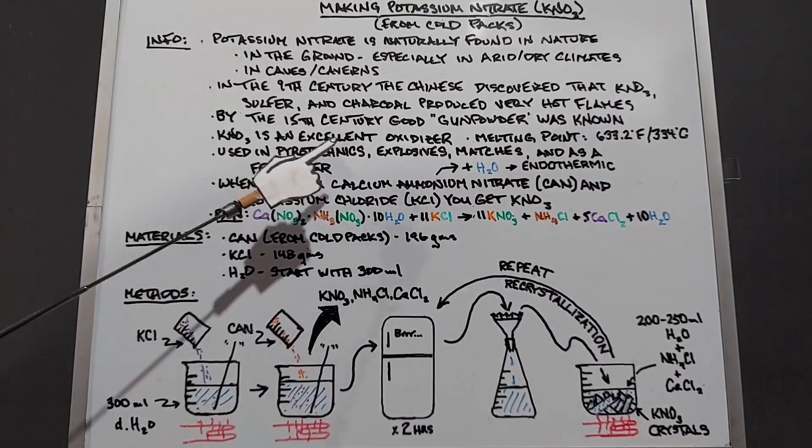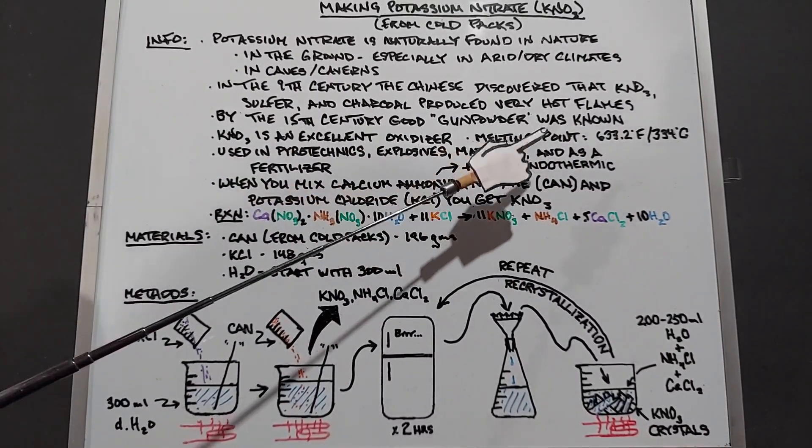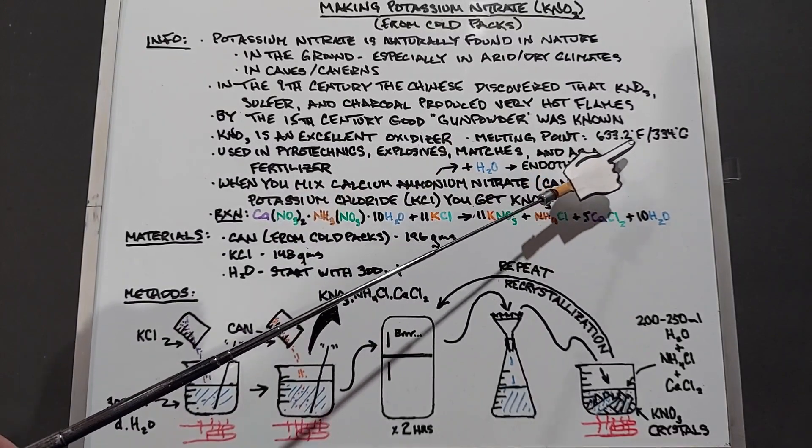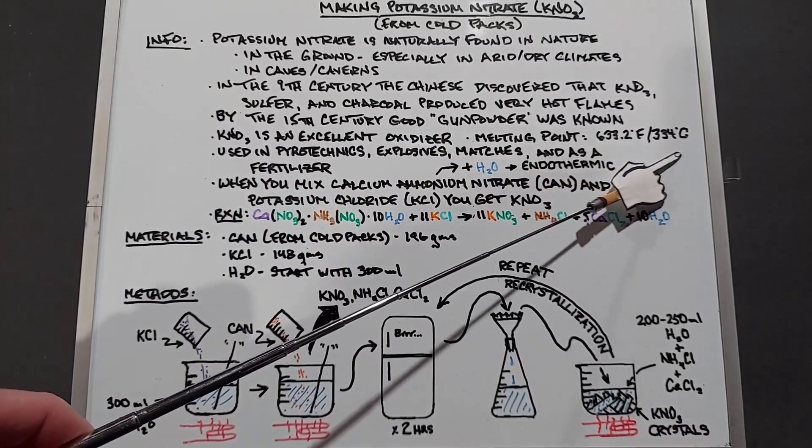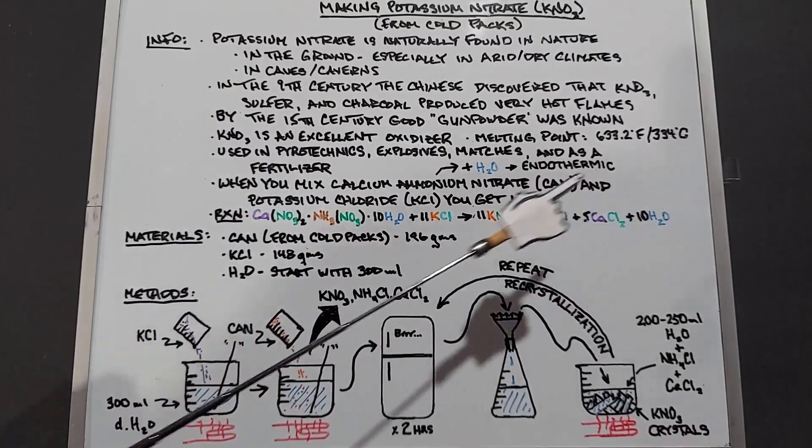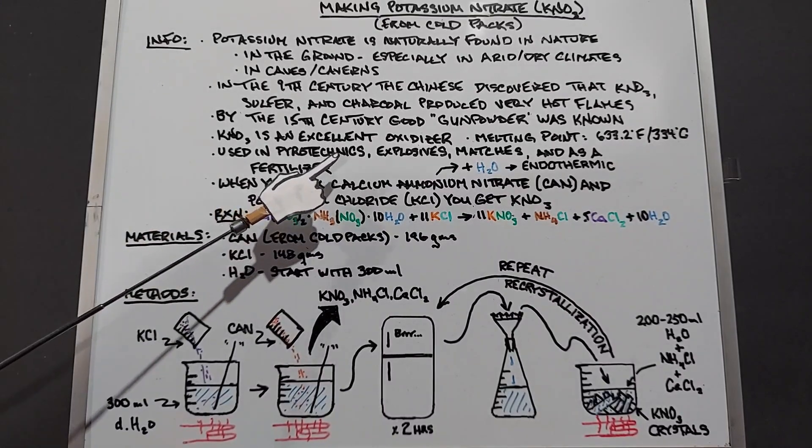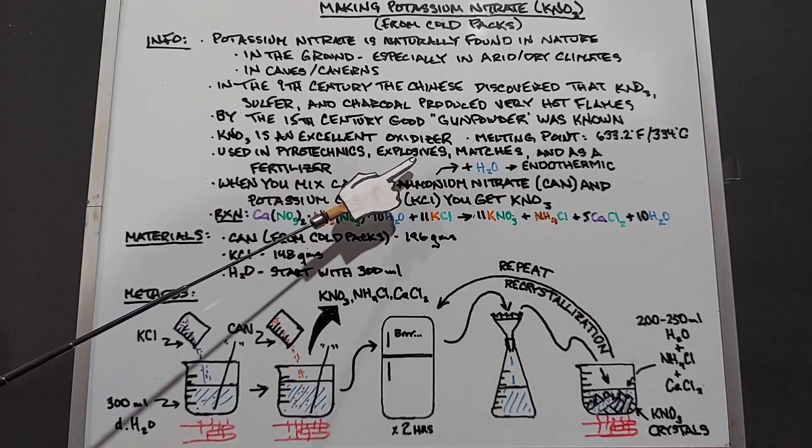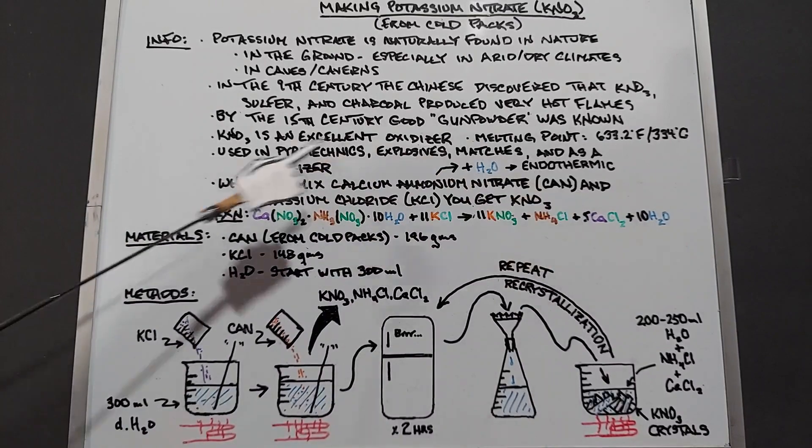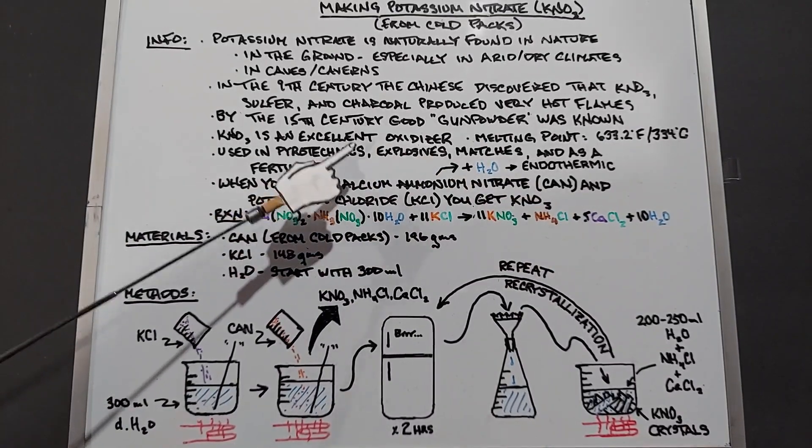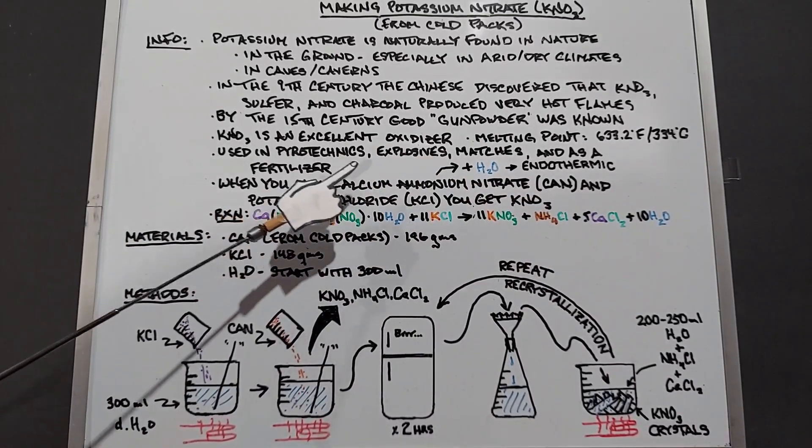Potassium nitrate is an excellent oxidizer, really commonly known. Its melting point is 633.2 degrees Fahrenheit or 334 degrees Celsius. It is found in pyrotechnics, explosives, matches, and as a fertilizer. Up to 5% of the fertilizer sold in the world is potassium nitrate.